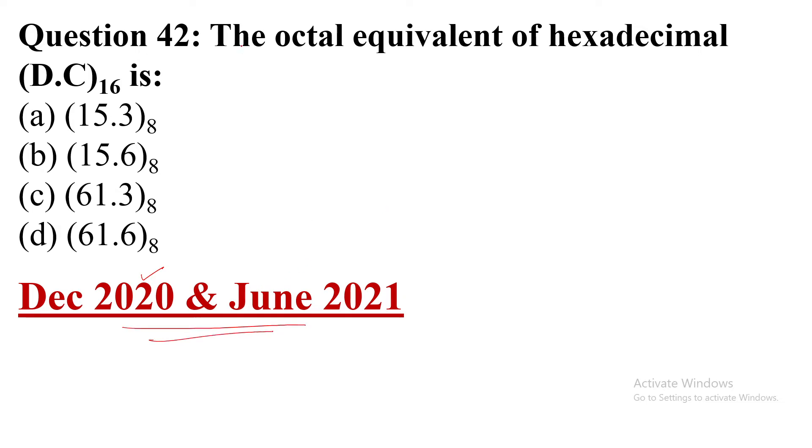This is question number 42: The octal equivalent of hexadecimal D.C base 16 is... So that means convert hexadecimal to the octal number system.